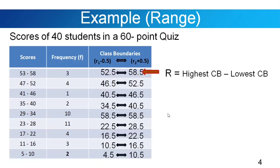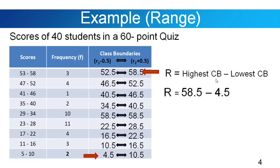We have our highest class boundary of 58.5 and the lowest class boundary of 4.5. Using the formula for the range — that is equal to highest class boundary minus lowest class boundary — we get 58.5 minus 4.5, so our range is equal to 54.